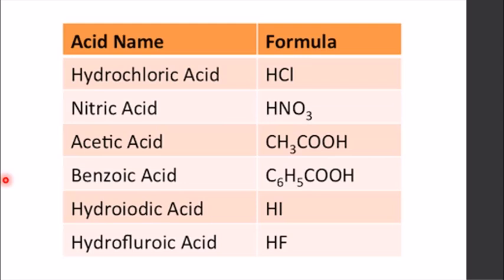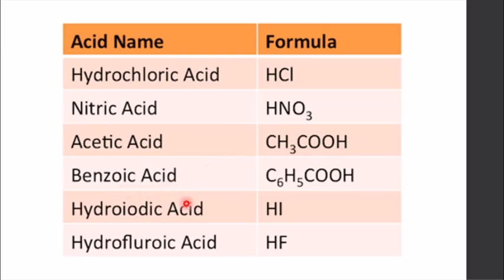Here are a few examples of acids with their formulas. Hydrochloric acid — formula HCl, with hydrogen and chlorine. Nitric acid — HNO₃. Acetic acid, which is nothing but vinegar — formula CH₃COOH. Benzoic acid — formula C₆H₅COOH, where the acid group is COOH. Hydroiodic acid — HI. Hydrofluoric acid — HF.